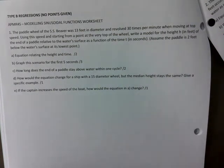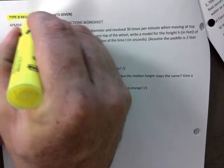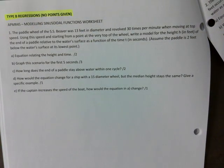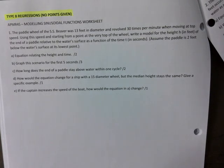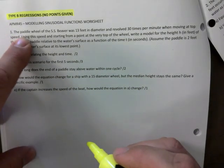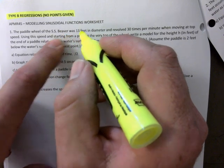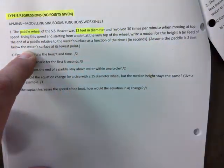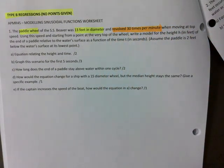Okay, the last piece is no points given. The period, the max, the min, the mid, all of that is still somewhat you have to just find it. The paddle wheel of the SS Beaver has a 13 feet diameter.